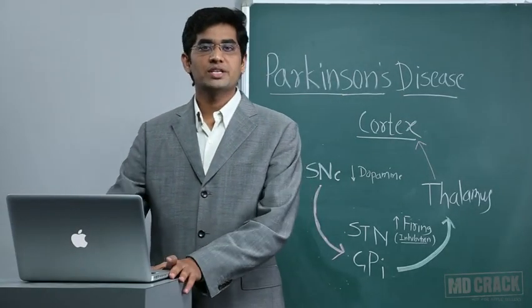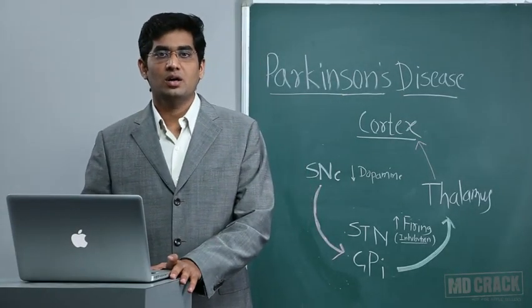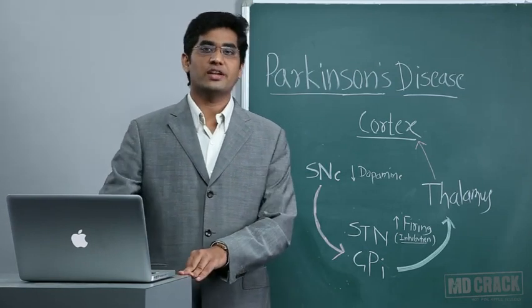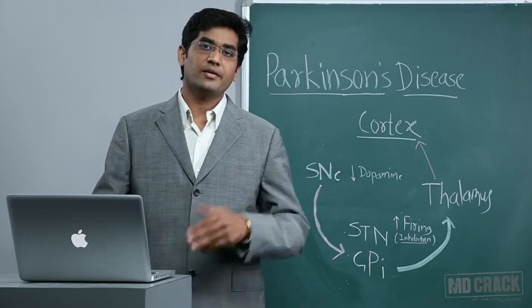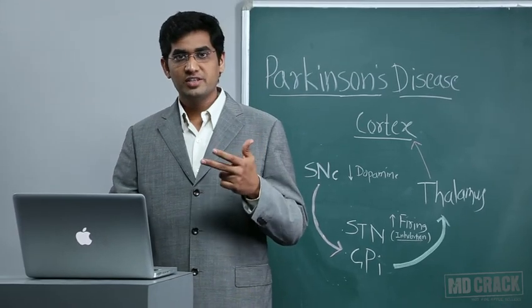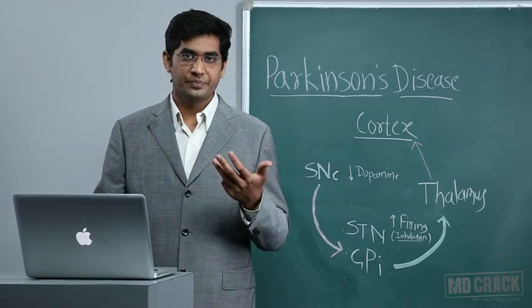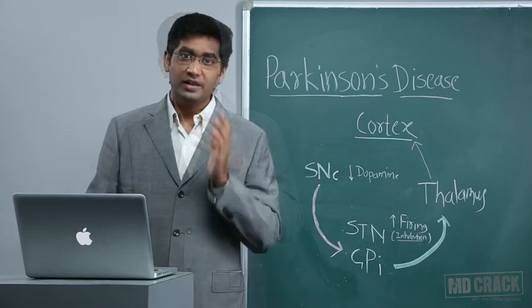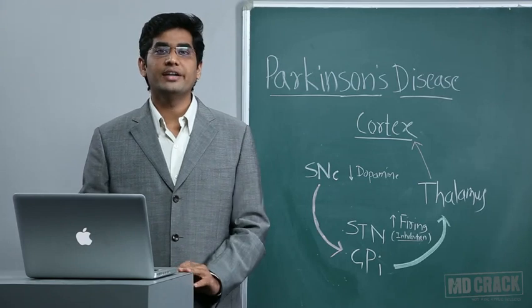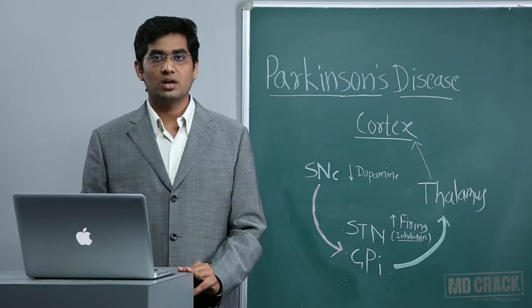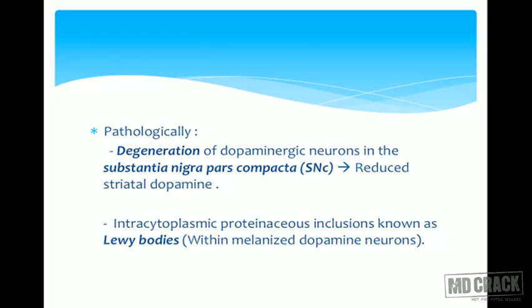Welcome to a session on the nervous system. Today's topic is Parkinson's disease, which is a degenerative disease characterized by three cardinal features: first, resting tremors; second, bradykinesia; and third, rigidity. In some cases we can add gait abnormality. Parkinson's disease is basically a clinical diagnosis, and these three or four features are very important to diagnose it.